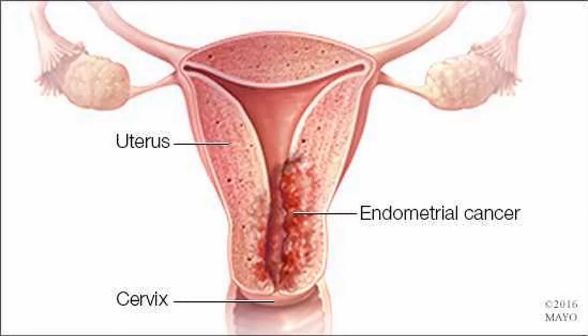A small number of endometrial cancers are type 2 endometrial cancers. Type 2 cancers are more likely to grow and spread outside the uterus and have a poorer outlook than type 1 cancers. Doctors tend to treat these cancers more aggressively. They don't seem to be caused by too much estrogen. Type 2 cancers include all endometrial carcinomas that aren't type 1, such as papillary serous carcinoma, clear cell carcinoma, undifferentiated carcinoma, and grade 3 endometrioid carcinoma. These cancers don't look at all like normal endometrium and so are called poorly differentiated or high grade.